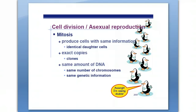Cell division is a type of asexual reproduction. The prefix 'a' means without, and mitosis doesn't require a male or female source of genetic material. During mitosis you produce cells with the same information — identical daughter cells. These are exact copies or clones of each other. All the cells in your body are clones of every other cell because they have the same genetic information and the same amount of DNA. When you make new body cells by mitosis, you start with 46 chromosomes and end with 46 chromosomes.